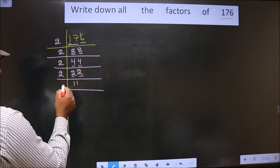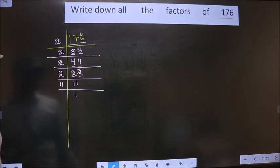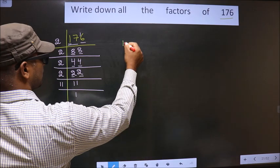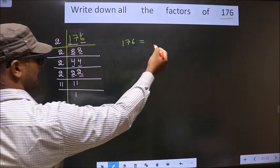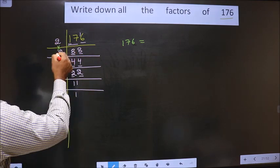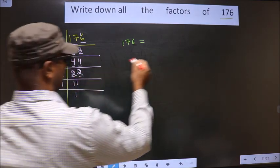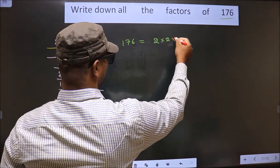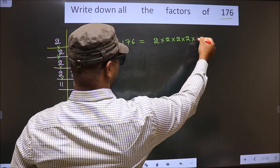Now we get 11. 11 is a prime number, so we take 11 once. So 176 is equal to the product of these numbers: 2 into 2 into 2 into 2 into 11.